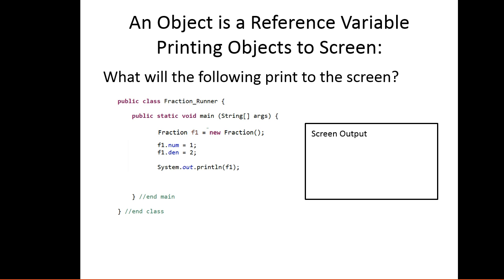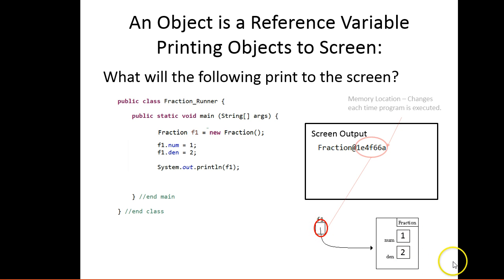An object is a reference variable - this is really important. This has a number of significant impacts in our programming. The question I have for you is: what is this going to print to the screen? If I run this, it's going to create a fraction object as we can see, but what it's going to print out is the reference to where the object is. It's printing out the reference, not the actual object information - the memory location. That will change each time you run your program. That's your reference type - it tells you the reference type and the memory location. If we want to print out the actual object, we need to access those fields individually.